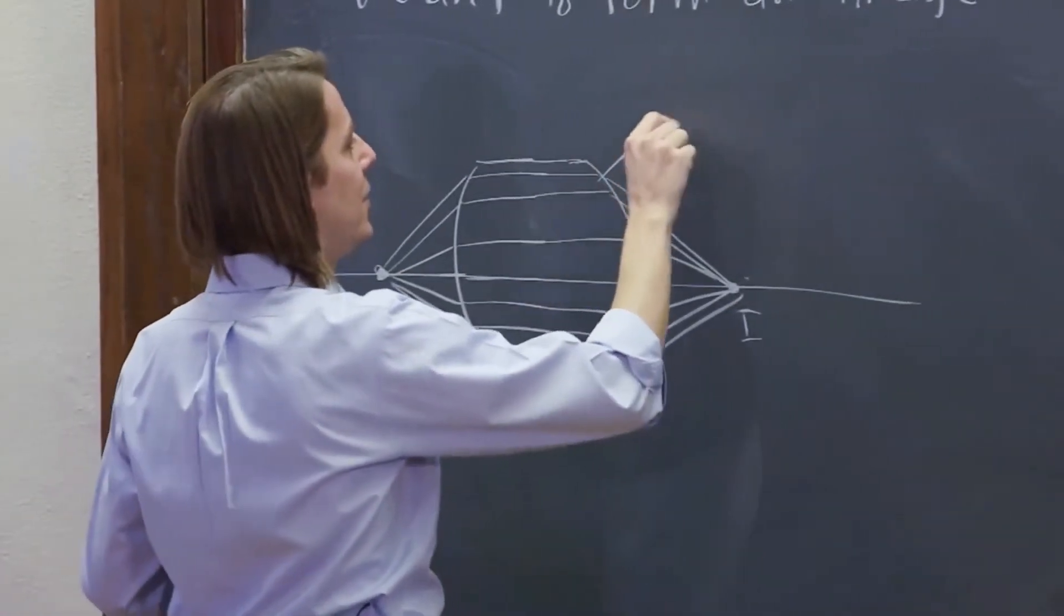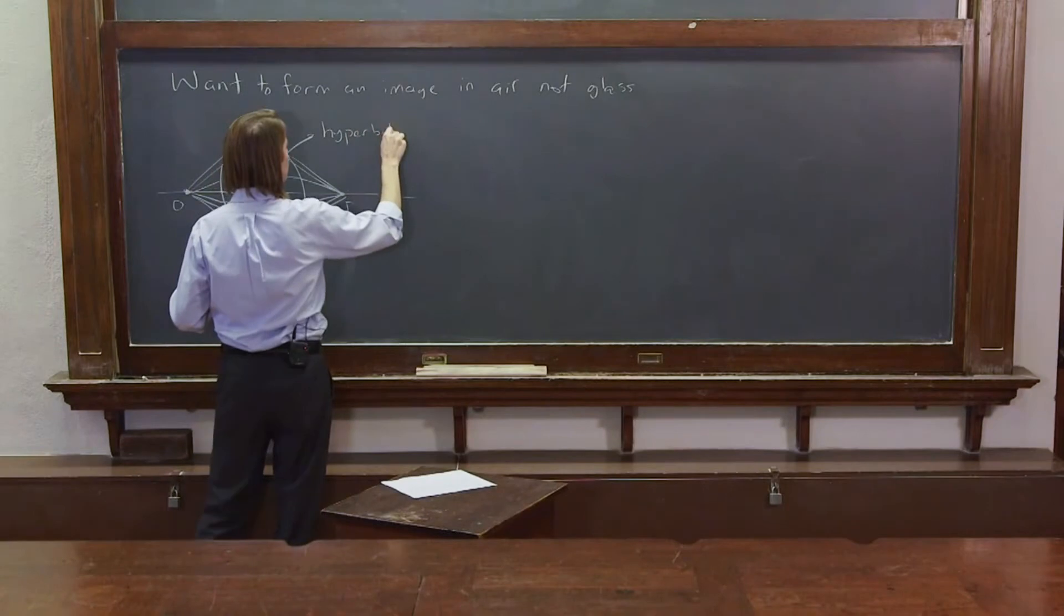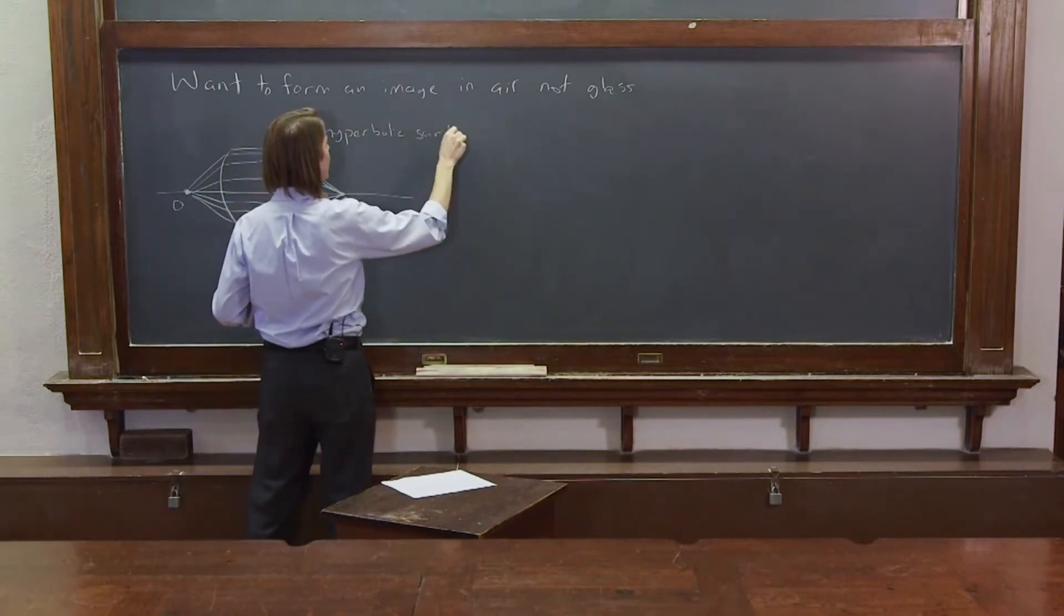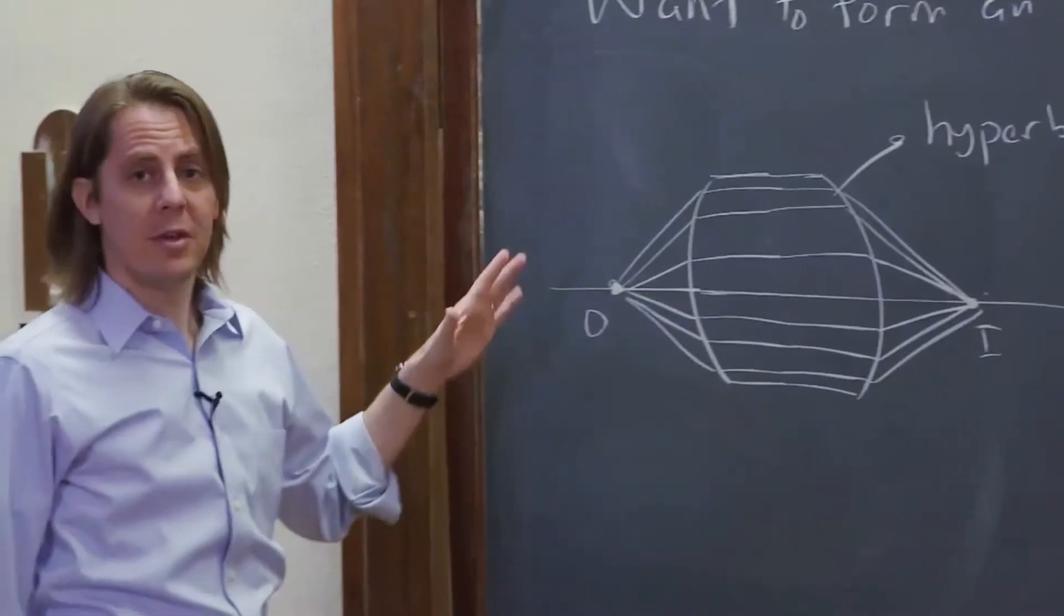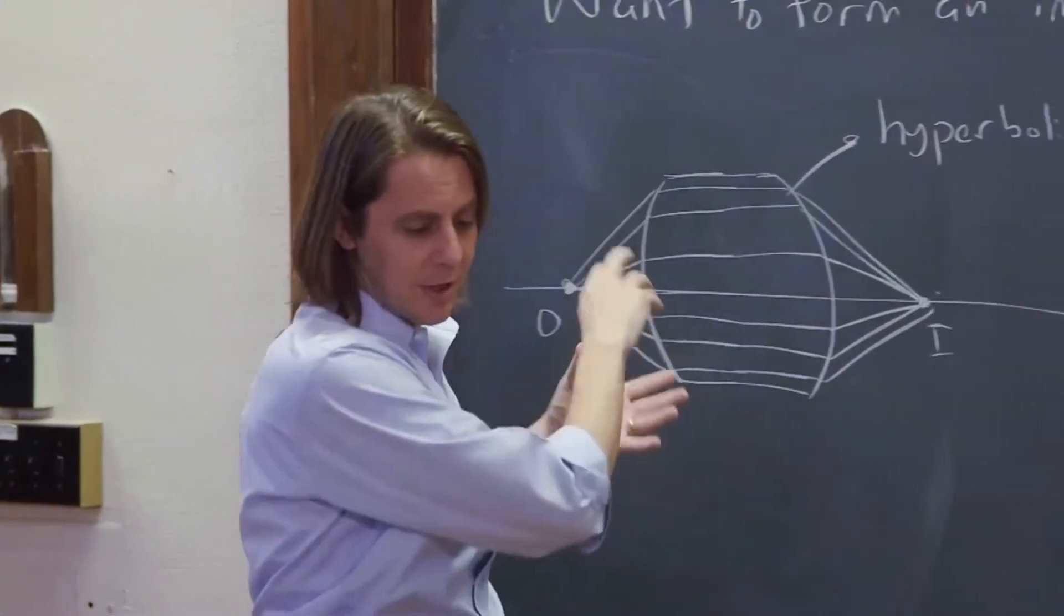So what surface does this? This is a hyperbolic surface, a hyperboloid. So you might think this is a good way to make a lens because we can have some light come and have it focus.